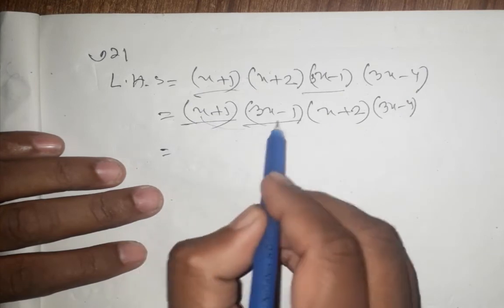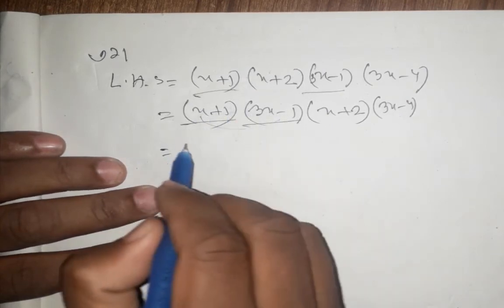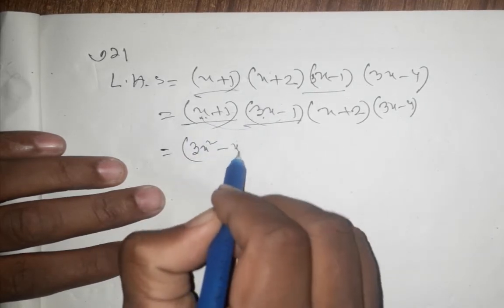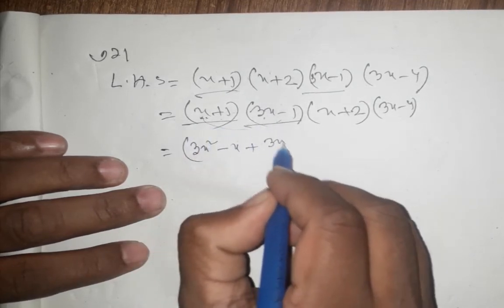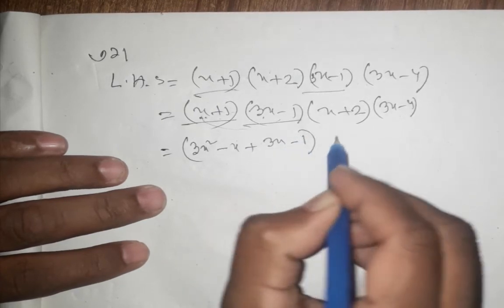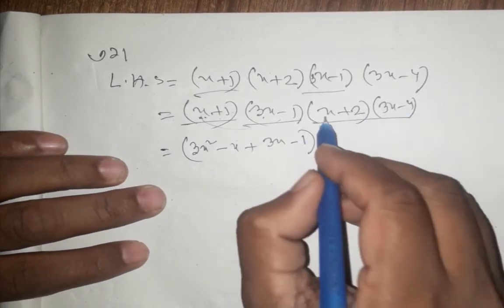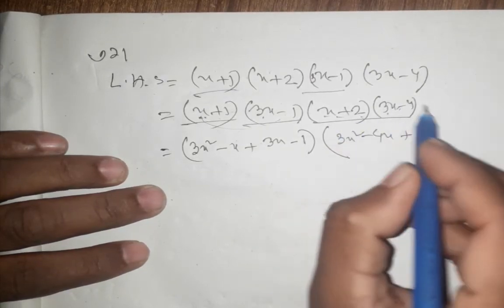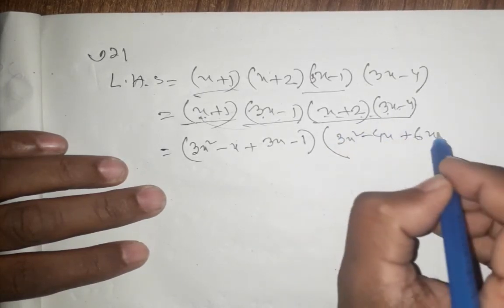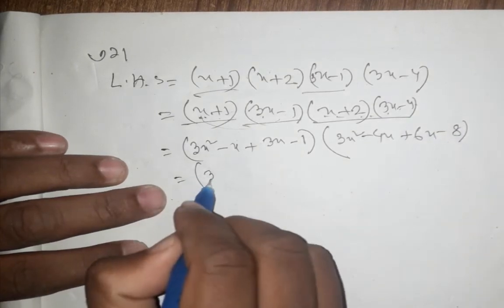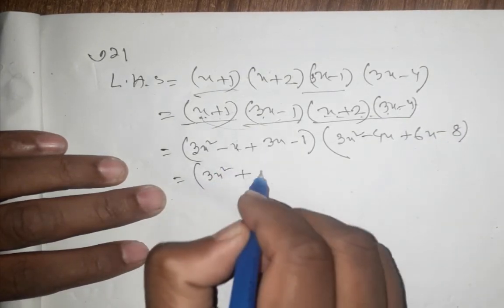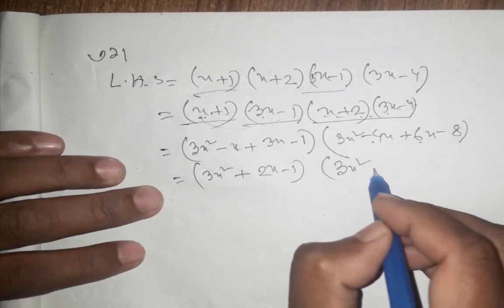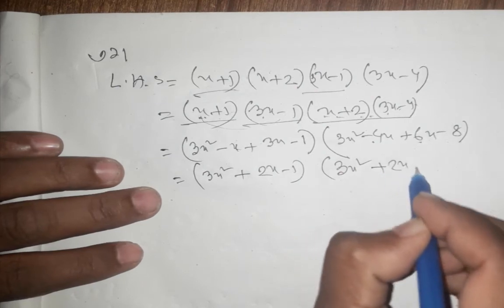x minus 2, but then 1 minus 3x, then divide this point. x, 3x squared, x plus 1. x plus 3x, 1x plus 3x, 2 times 2x into 3x squared. So 6x. x squared is equal to 2x minus 1, 3x squared equal to 2x minus 8.